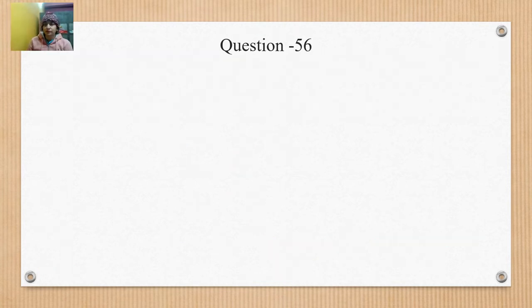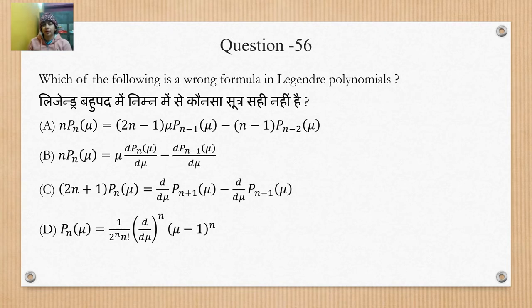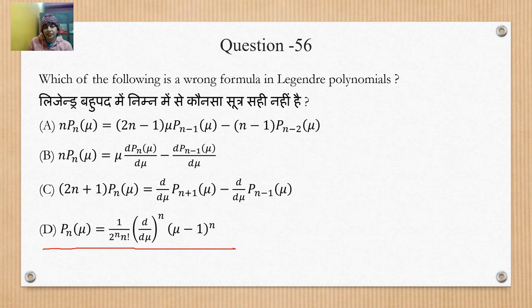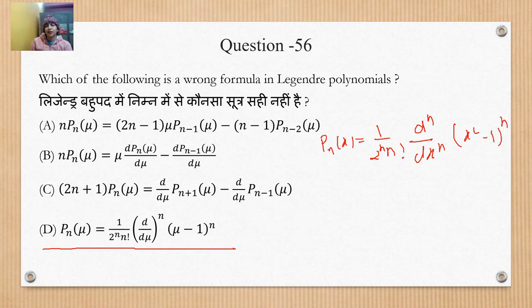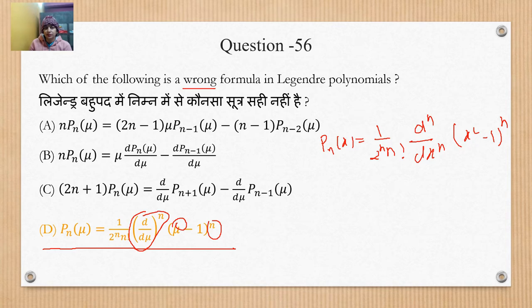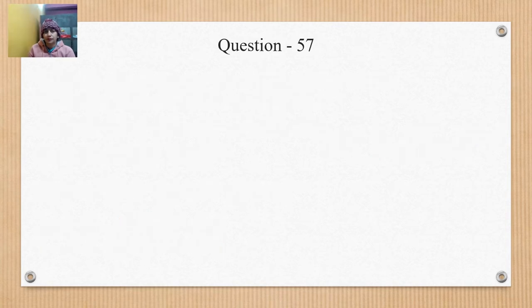Question 56: Which of the following is the wrong formula in the Legendre polynomial? There are 4 equations given. Looking at the last equation, it resembles the Rodrigues formula. The correct Legendre formula is P_n(x) = (1 / (2^n · n!)) · (d^n/dx^n)(x²−1)^n. In the given option, the power is missing, so the incorrect formula is identified and that option is wrong.